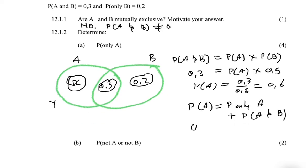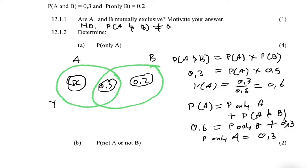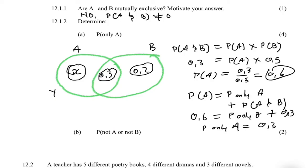Taking 0.3 to the other side: P(only A) = 0.6 − 0.3 = 0.3. Once you find P(A) = 0.6, it becomes obvious the answer is 0.6 minus 0.3. Now we want the probability of not A or not B.